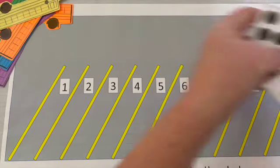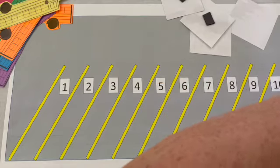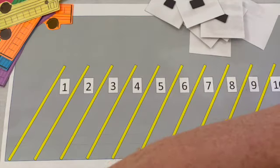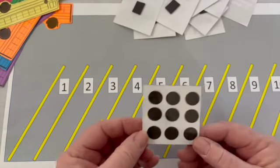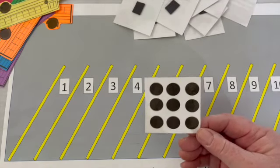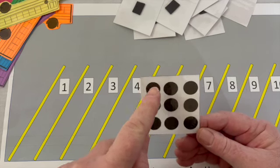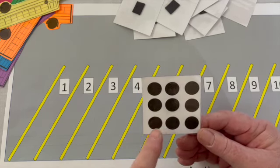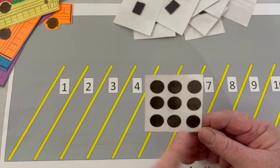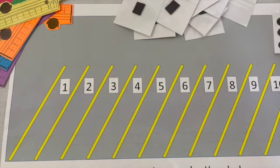Now if that's too easy, you can use the dot cards. You're gonna turn your dot cards over so you can't peek and you pick a dot card randomly. Oh my goodness, that's a lot of dots. First I have to count the dots. One, two, three, four, five, six, seven, eight, nine.